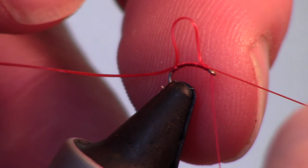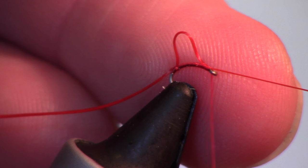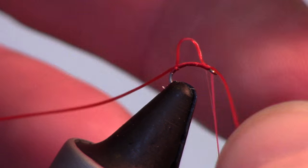Now pull on the tag end of the material until the middle bend is at the right height for your liking. Once the material is in the right place, you can make 2 tight wraps to lock it in place.